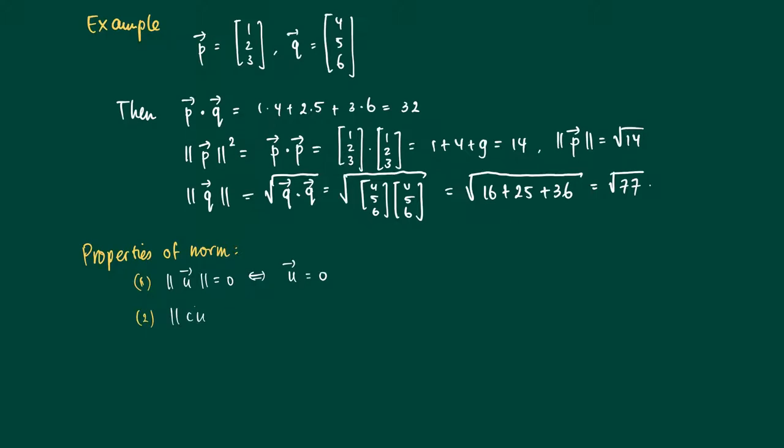Secondly, if we multiply a vector u with a scalar c, then the length of this vector is equal to the absolute value of c times the length of u. This can be seen as follows: we calculate the length of cu squared, which is the inner product of cu with cu.